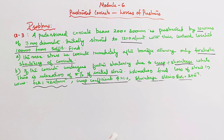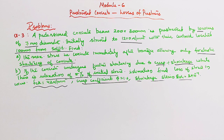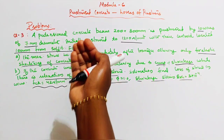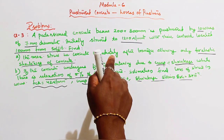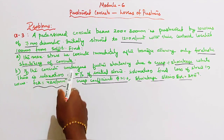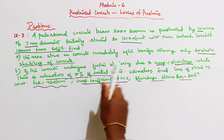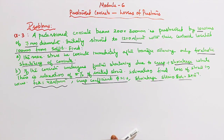Here, we have a pre-tensioned concrete beam of size 200 by 300. We have 10 wires of 7 mm diameter, initially stressed to 1200 N/mm², centroid located 100 mm from soffit. We need to calculate the eccentricity. The maximum stress in concrete immediately after transfer, allowing only for elastic shortening of concrete — we need to find this due to elastic shortening.